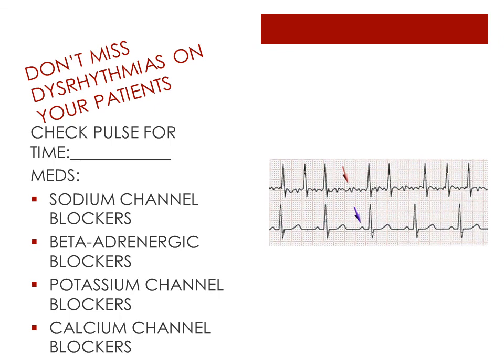Lastly, we have the antiarrhythmic medications. Causes of abnormal heart rhythms may include hypertension, cardiac valve disease, coronary artery disease, potassium level alterations, heart failure, diabetes, stroke or MI, and certain medications. To treat dysrhythmias, we can block either the sodium, potassium, or calcium channels, and also the beta-1 receptors. When taking a patient's pulse, it's always a good idea to check it for one full minute so that we don't miss a dysrhythmia that would benefit from these medications.